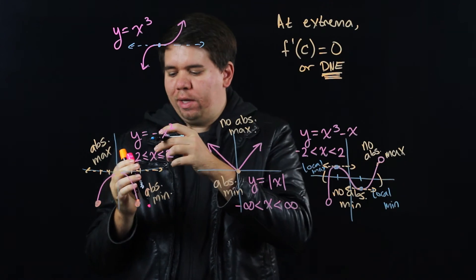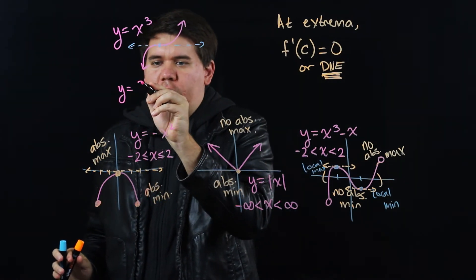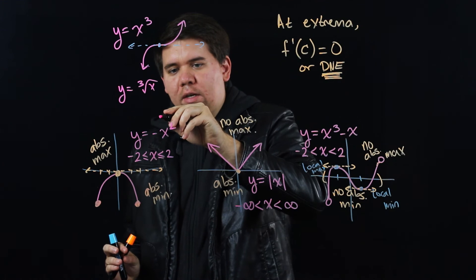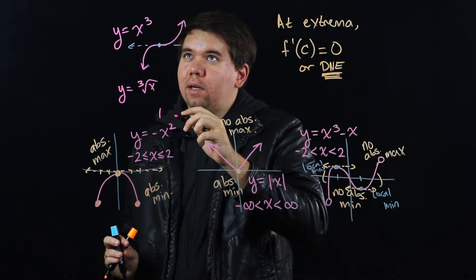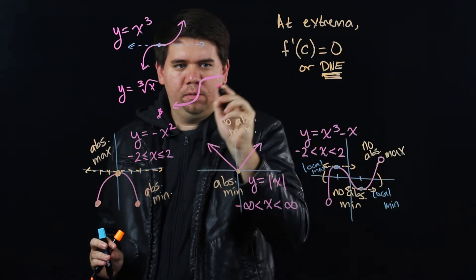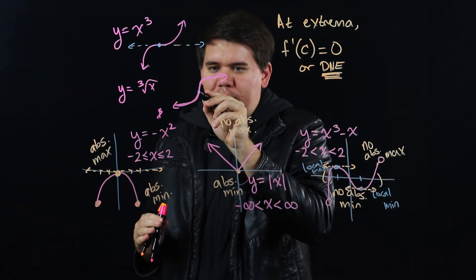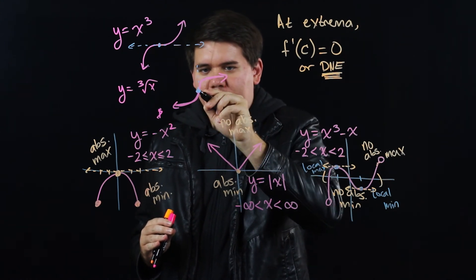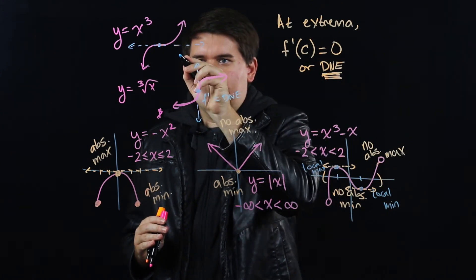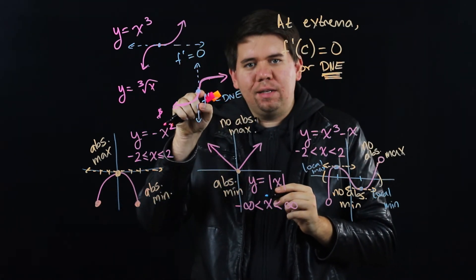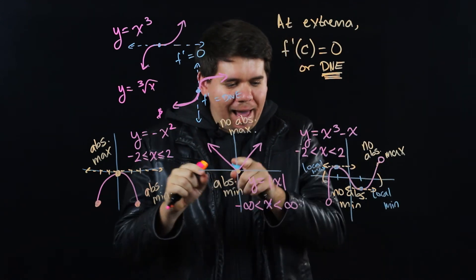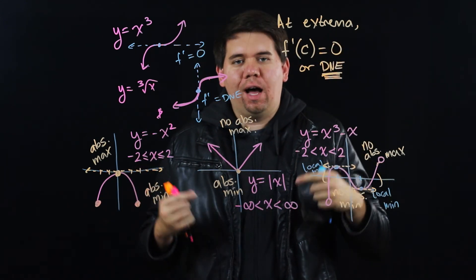But if you're at an extrema, you'll either have derivative 0 or does not exist. In a similar way, you could have some graph where you're at a point. Consider the graph like y equals the cube root of x. At the point x equals 0 right here, you have a derivative that's not defined. If you try to calculate it, it comes out to be vertical. So your derivative does not exist. But just because the derivative does not exist doesn't mean that you're at a maximum or a minimum. That's neither a maximum nor a minimum. So we have at each extrema your derivative is 0 or doesn't exist. But the converse isn't true.